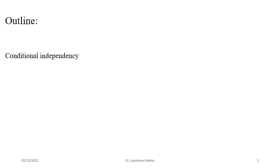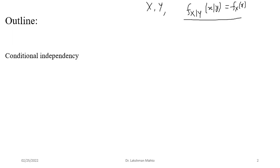Coming to the outline of today's lecture: first I will discuss part of the previous lecture. In the last lecture we discussed the independence of any two random variables. If X and Y happen to be any two continuous random variables from the same experiment, then we say X and Y are independent if the conditional density of X given Y is just equal to the density of X — meaning the observation of Y does not affect X.